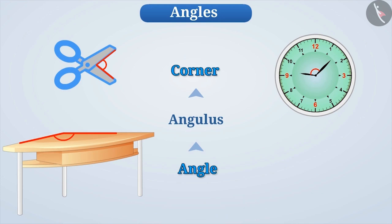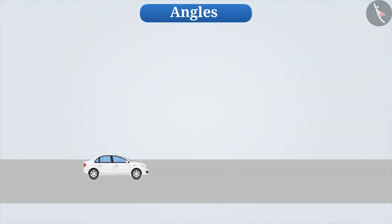So let's learn more about angles. Suppose a car is moving in a straight line from place A to place B. Then to find the change in position of the car, we need to find the distance between A and B.